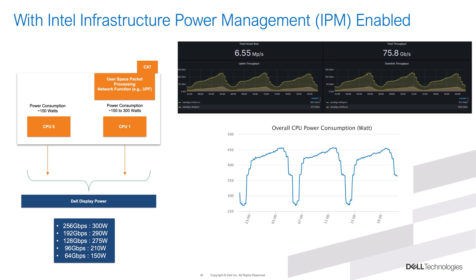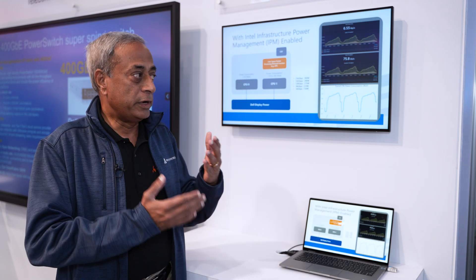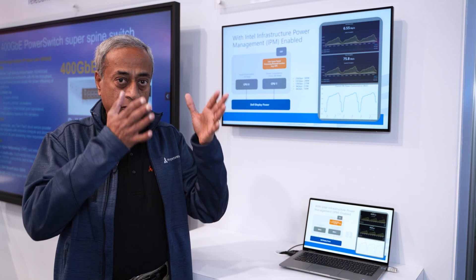In the next slide, we are showing how IPM enables us to manage runtime power. Again, in this scenario, CPU 0 has no packet processing — all packet processing is happening in CPU 1. As you can see in this demo, at 256 Gbps the power consumption is about 300 watts, at 128 Gbps it comes down to 275 watts, and at 64 Gbps it comes down all the way to 150 watts. So depending upon the throughput, the power consumption goes down.